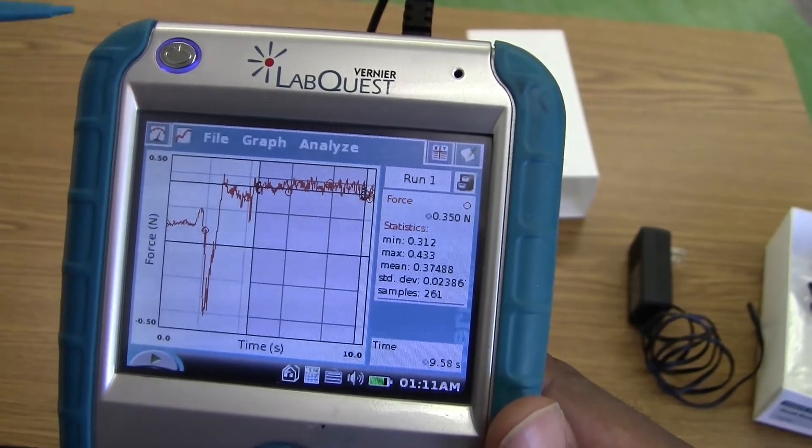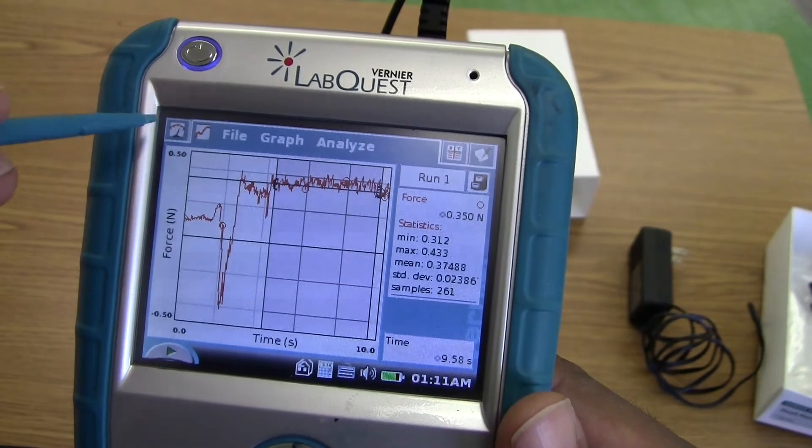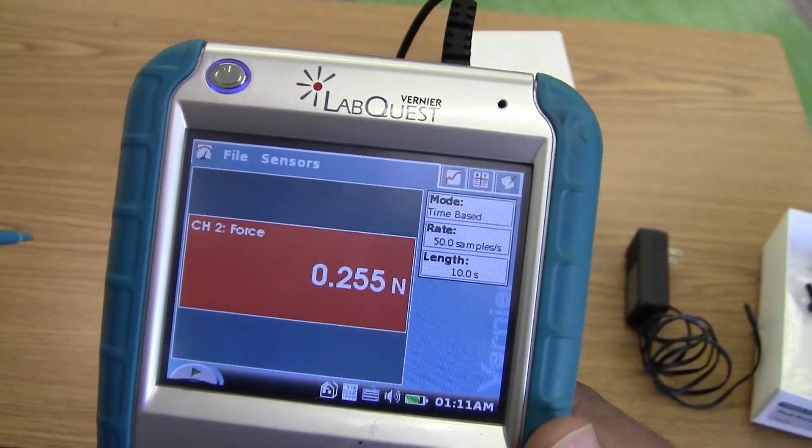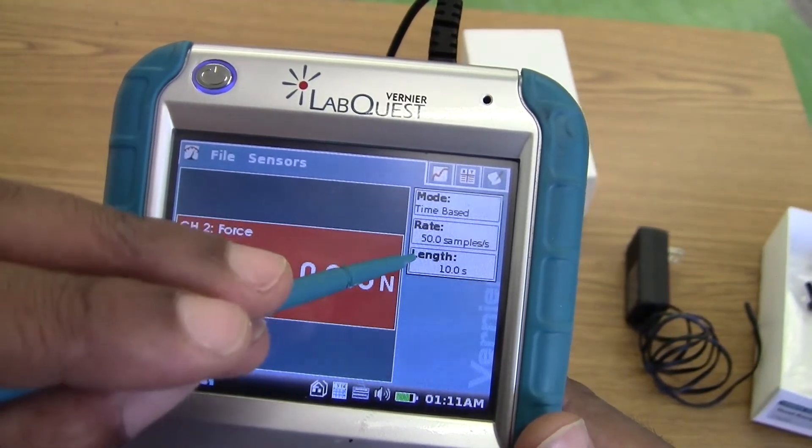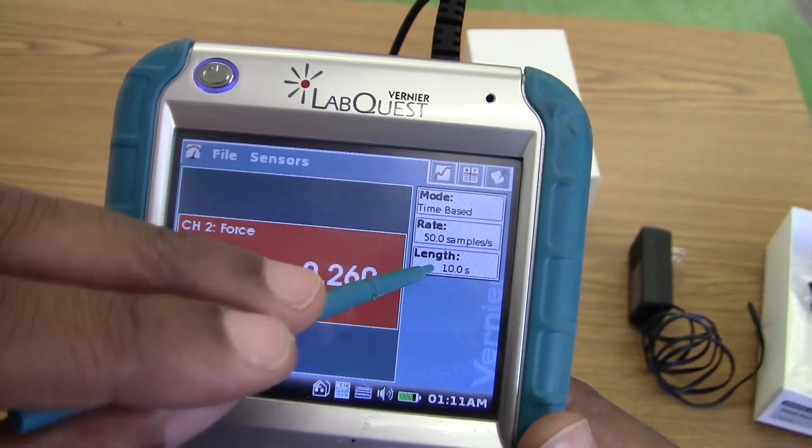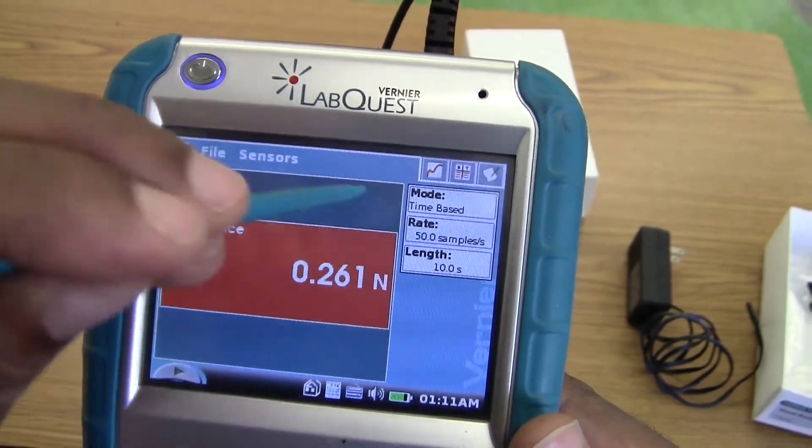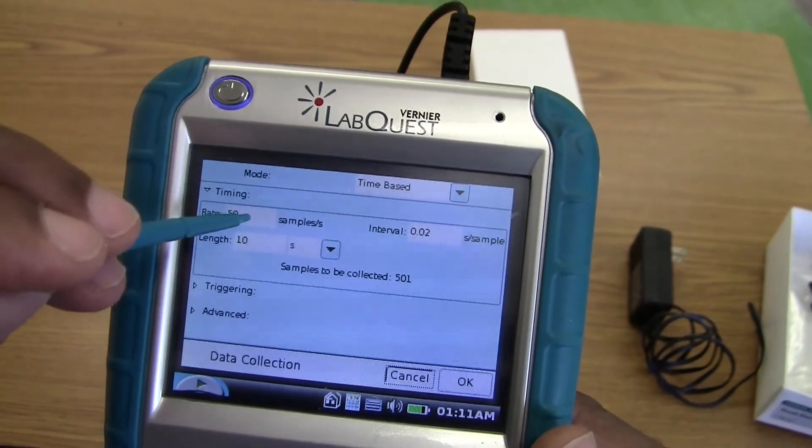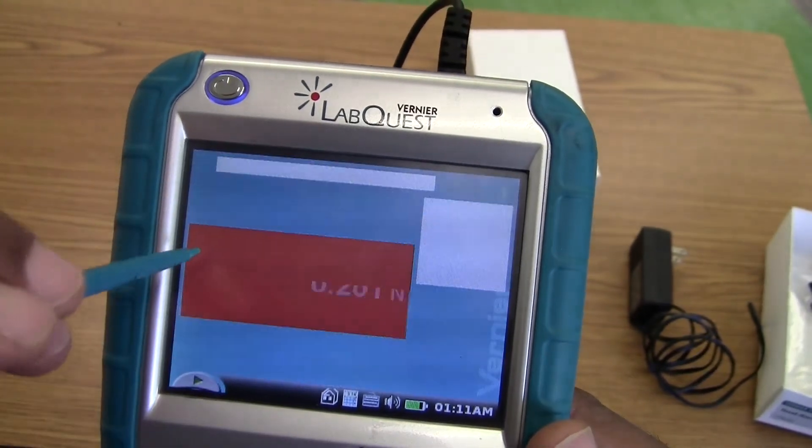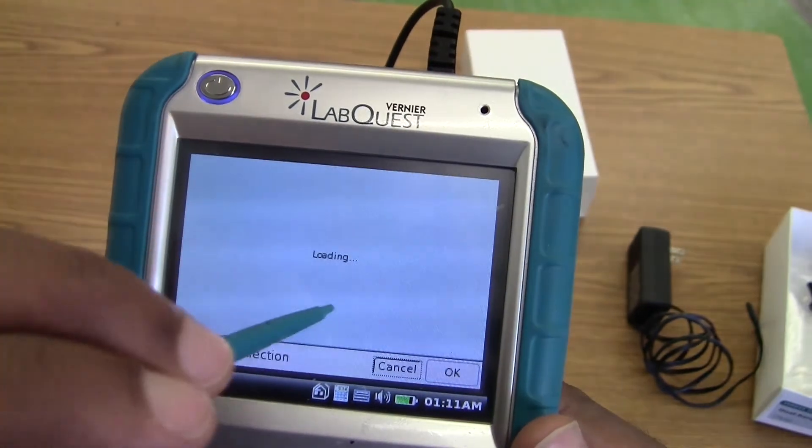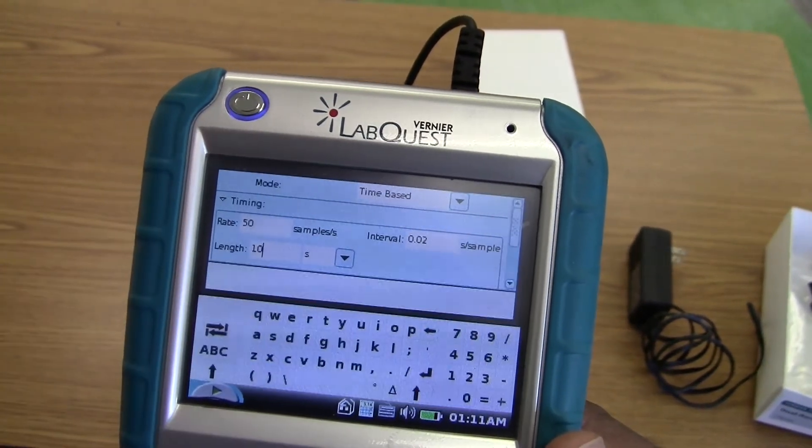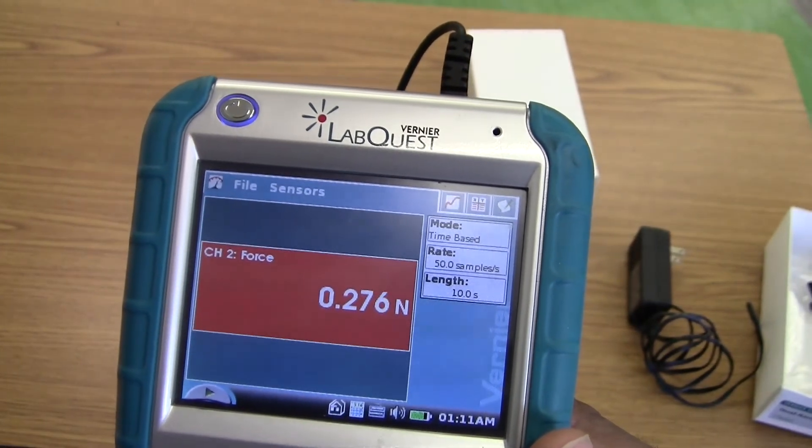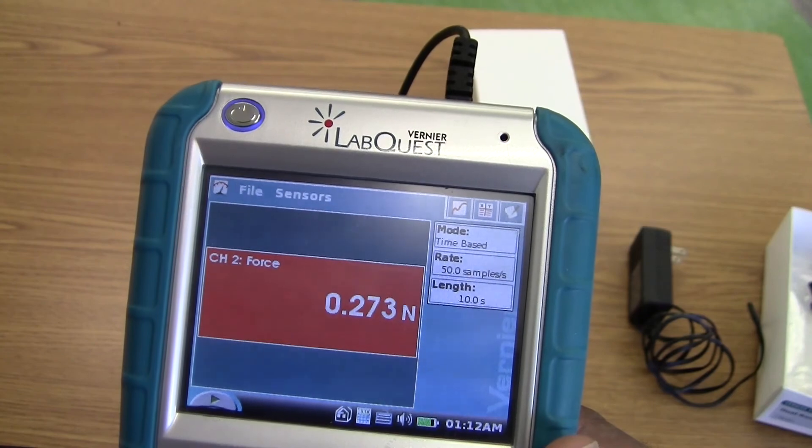If we want to get back to the original screen, we click right here. That's it. If we needed to change the length of time or the rate, we can just click on that screen over there and we could change the samples per second. We can also change the amount of time that we'd like to measure for. That's how we use the force sensor in LabQuest.